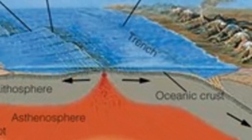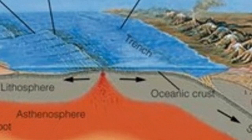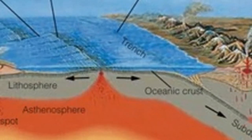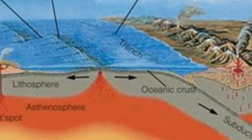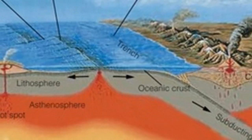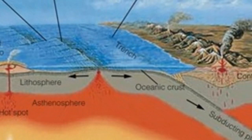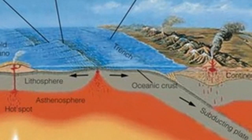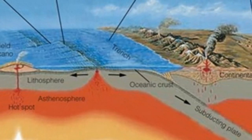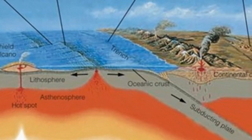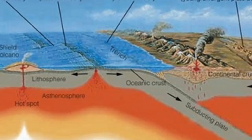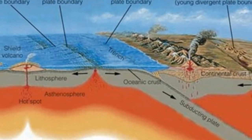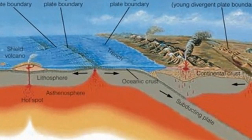In those settings where rifting continues, the rift system will evolve into a young narrow ocean basin, exemplified by the present-day Red Sea. Eventually, seafloor spreading results in the formation of a mature ocean basin bordered by rifted continental margins. The Atlantic Ocean is such a feature.